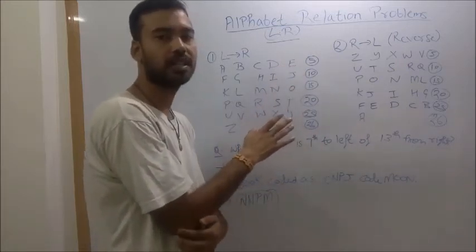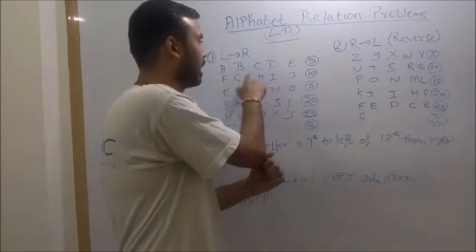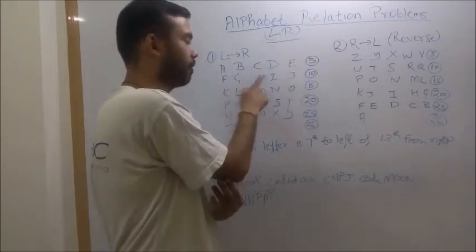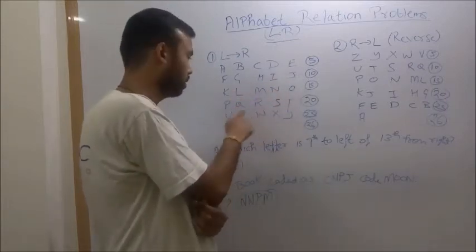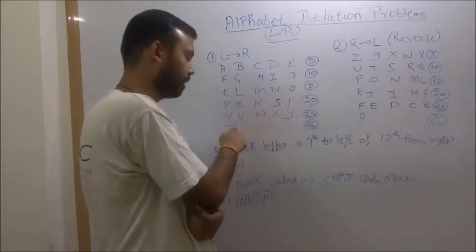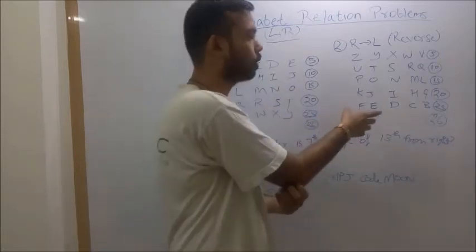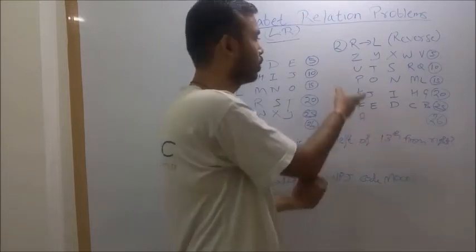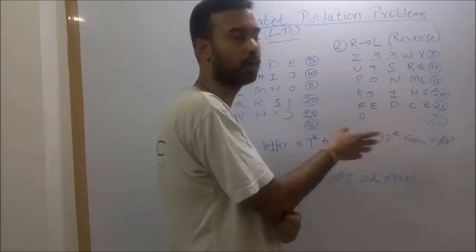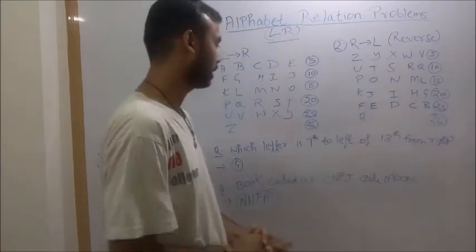I have distributed this in five groups. First of all write A to E, then F to J, then K to O, P to T, U to Y and then finally Z. This is one pattern and also we need to write reverse pattern. If it is asked in questions to solve like that, then we need to follow this R to L pattern.